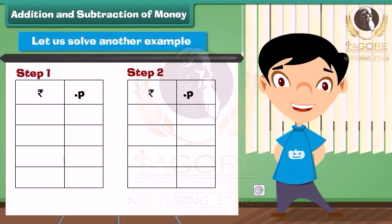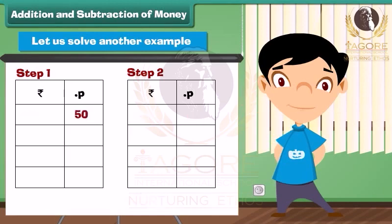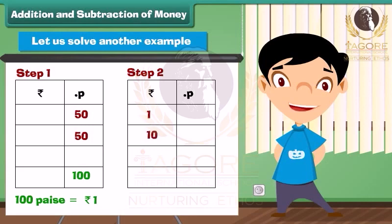Let us solve another example: what is the sum of 10 rupees 50 paise and 15 rupees 50 paise? Step 1: Write the numbers in the correct column. Step 2: Add the numbers in the paise column — 50 plus 50 equals 100 paise. Since 100 paise equals 1 rupee, write zero below the paise column and take 1 as carry. Then add the rupees column: 1 plus 10 plus 15 equals 26 rupees. Write 26 under the rupees column.